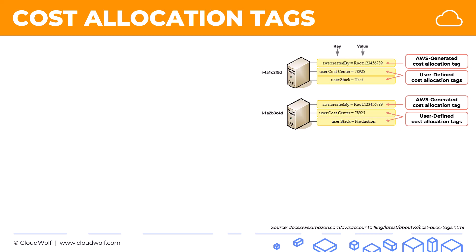In this case, the company decided to create two tags. Each one of these EC2 instances has the cost center of 78925, but they have different stack tags — one is in the test environment and another is in the production environment. This allows you to group your costs.